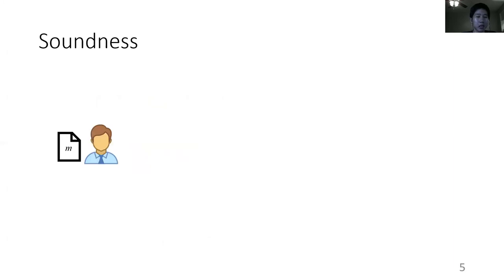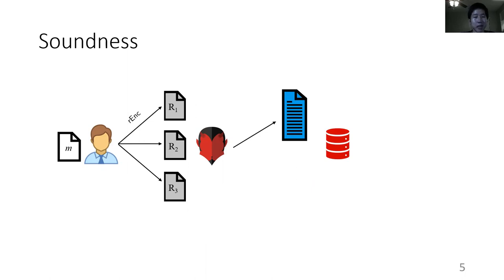Finally, to capture the incompressibility property that we discussed earlier, we define this soundness game, where a challenger takes a message, runs encode to produce several replicas of the message, and gives it to an adversary. This adversary takes a look at these replicas, and outputs the state file, which can be anything it wants, to a second adversary. And the second adversary only has access to the state file, along with the original message. And its goal is to reproduce as many of the original replicas as possible.